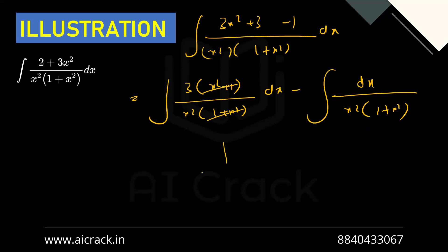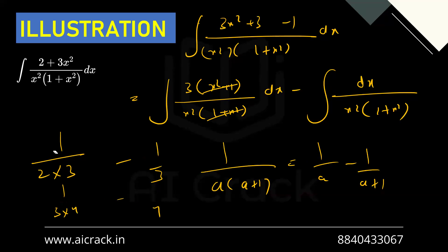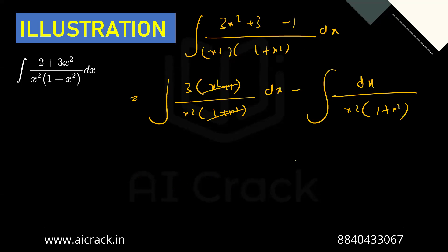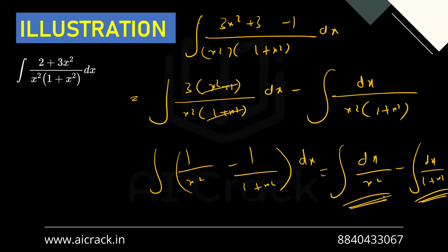For 1/[x²(1+x²)], we use the identity: 1/[a(a+1)] = 1/a − 1/(a+1). For example, 1/(2·3) = 1/2 − 1/3, and 1/(3·4) = 1/3 − 1/4. Applying this: 1/[x²(1+x²)] splits into 1/x² − 1/(1+x²). So the integral becomes ∫dx/x² − ∫dx/(1+x²), giving −1/x − tan⁻¹x + c.